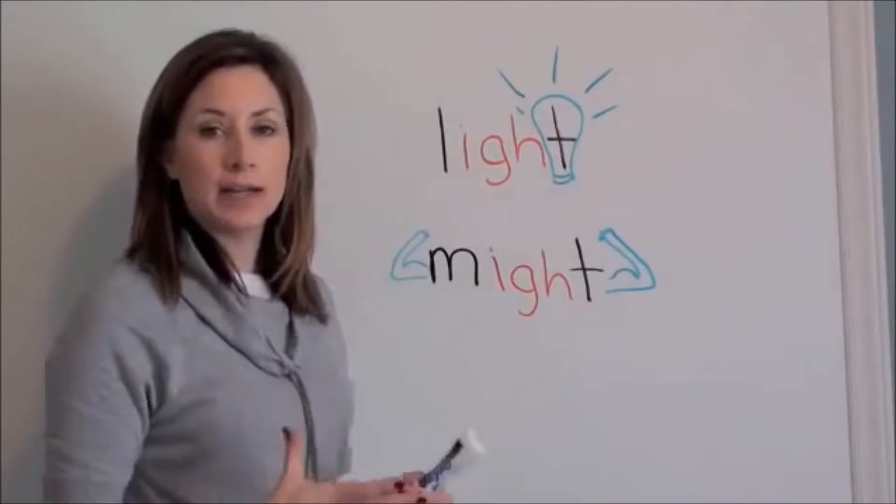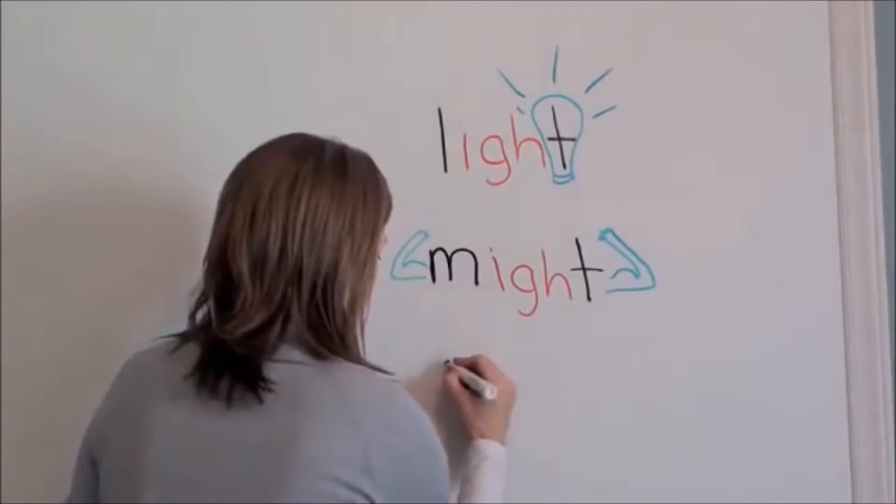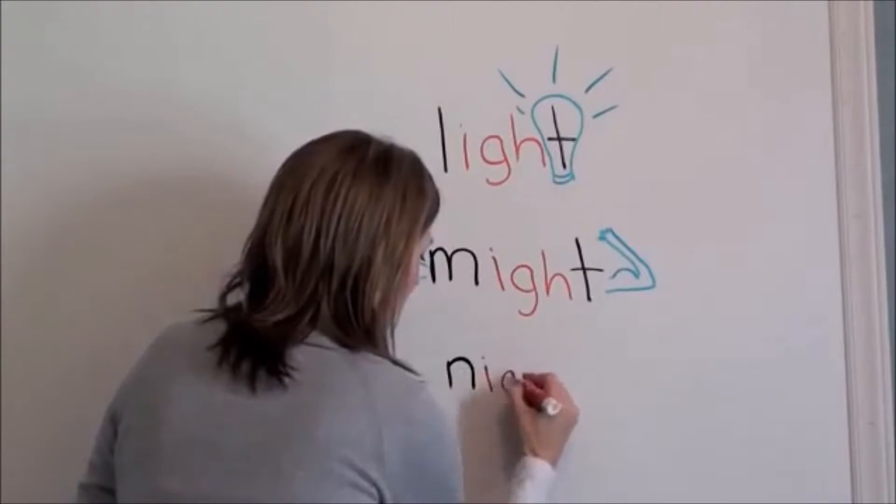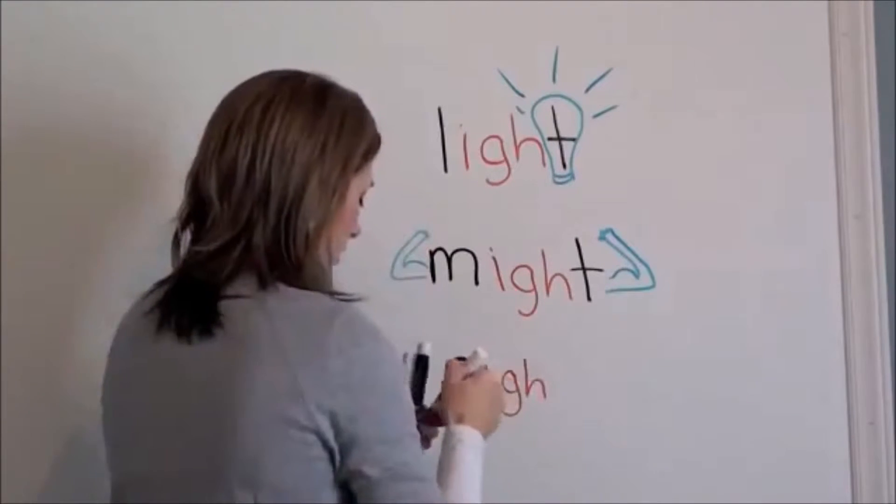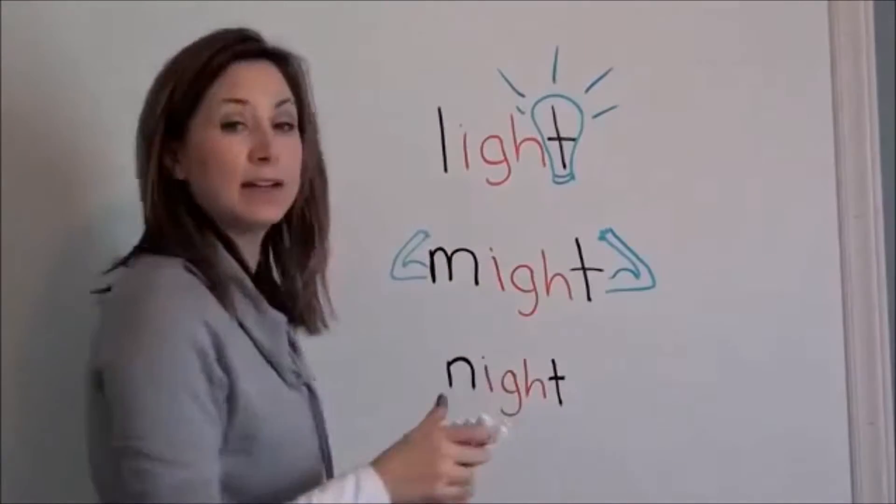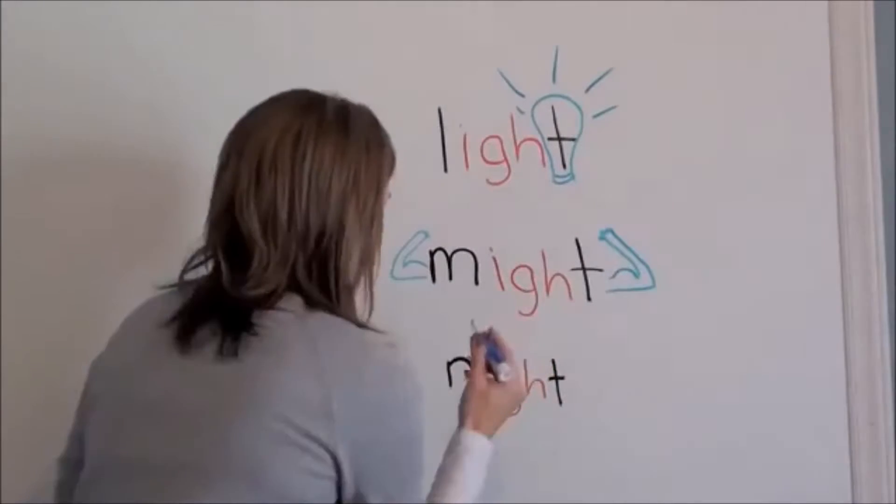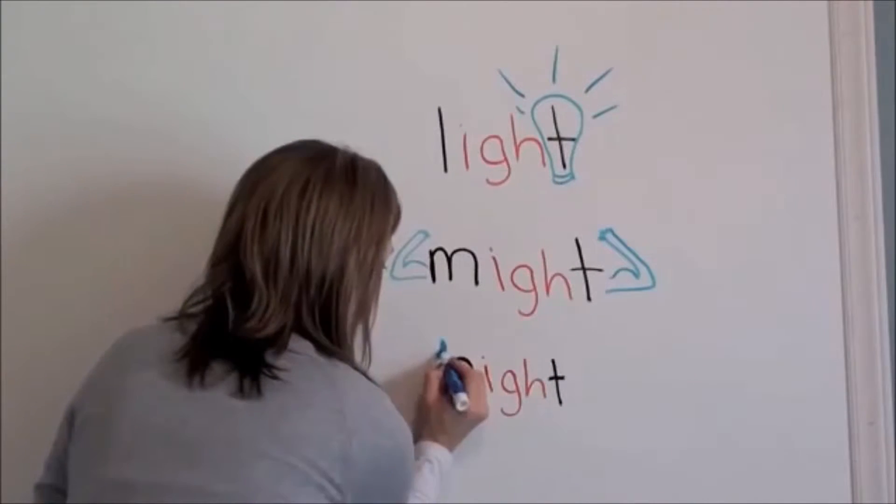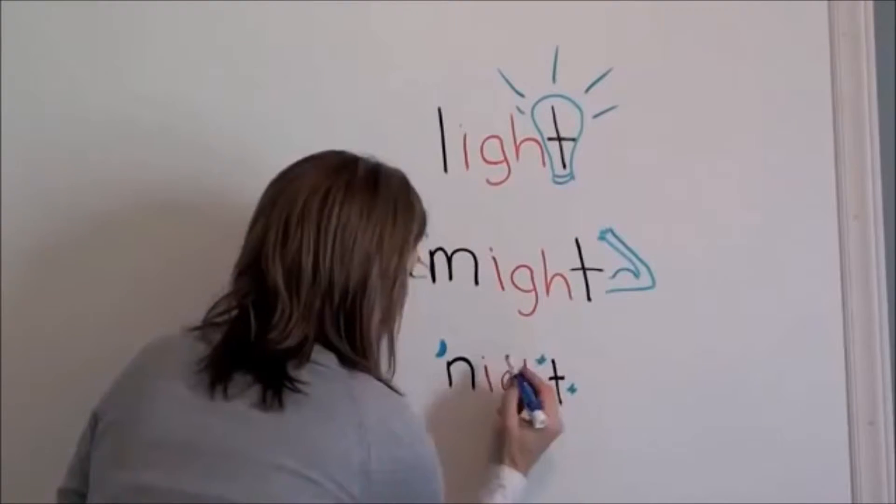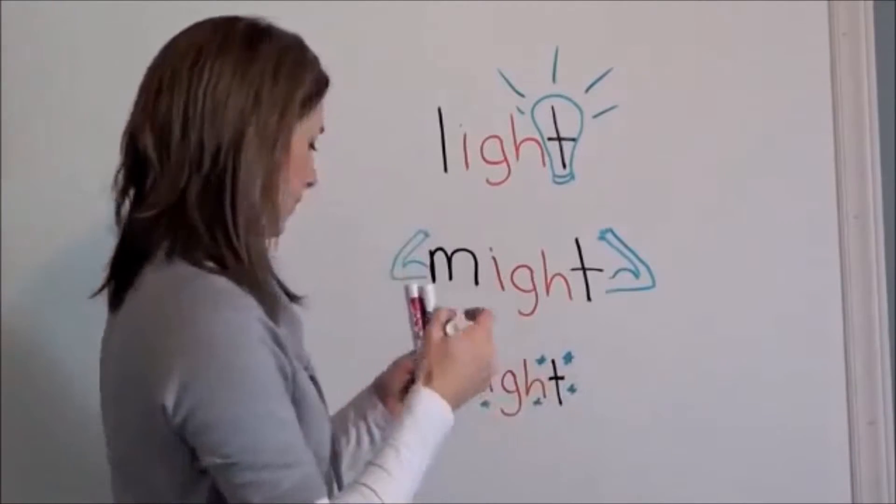Okay, the next word is going to be night. So again, same thing we do. N in black, I, G, H in red, and T in black. For night, I think moon and stars. So I'm just going to put those around to signify night. Night.